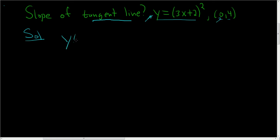So y prime is, let's see, we have to use the chain rule. You bring the 2 down, so you get 2 times (3x+2) to the first power, times the derivative of the inside. So that's just 3.